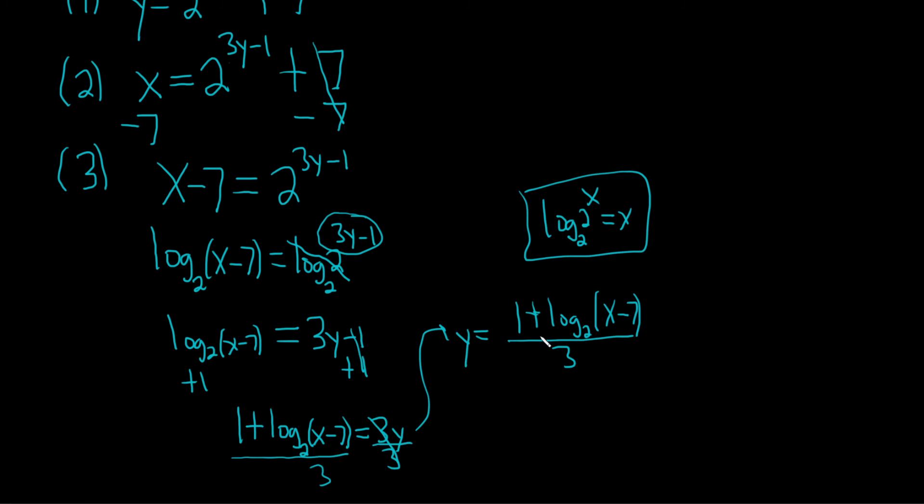Let's go ahead and use the correct notation. The inverse of f, f inverse of x, is equal to this. I'll break it up. It's 1 over 3 plus, and then this over 3. So I'll write it as 1 over 3 plus 1 third log base 2 of x minus 7. And that would be the inverse of our function f.